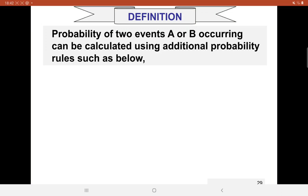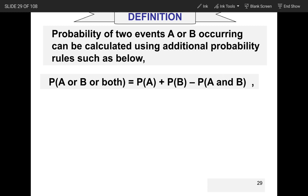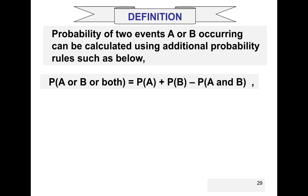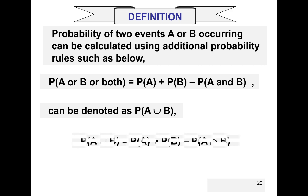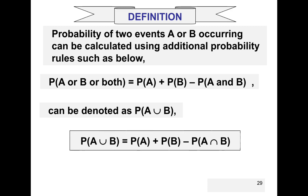Hello and hi everyone. The probability of two events A or B occurring can be calculated using the addition probability rule. The probability of event A or B or both occurring is equal to the probability of A plus the probability of B minus the probability of A and B, and can be denoted as P(A∪B) = P(A) + P(B) - P(A∩B). This is what we call the addition probability rule.